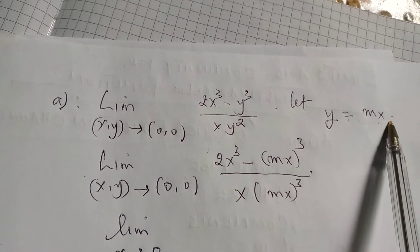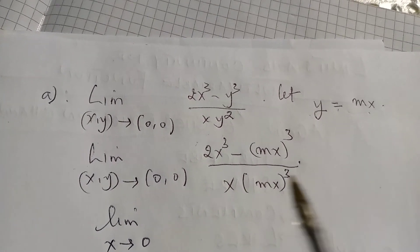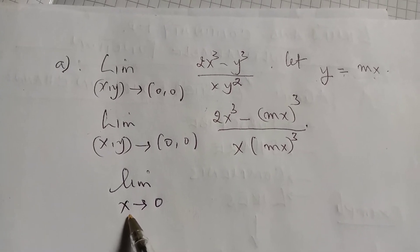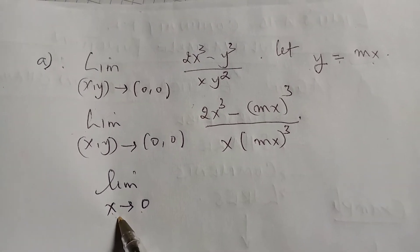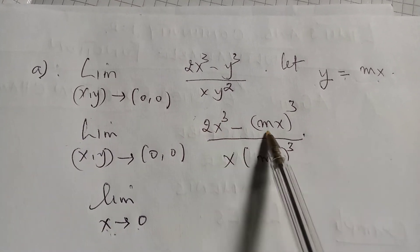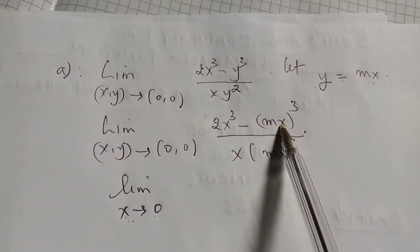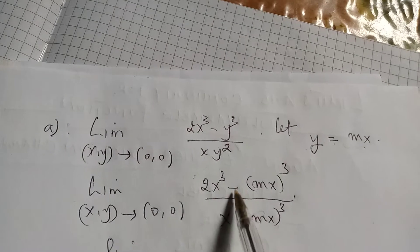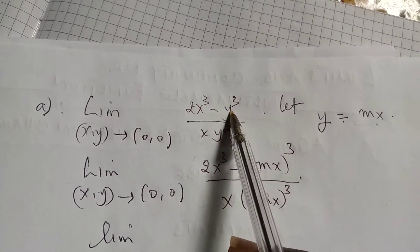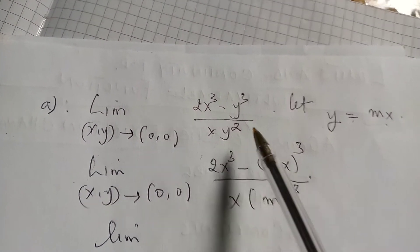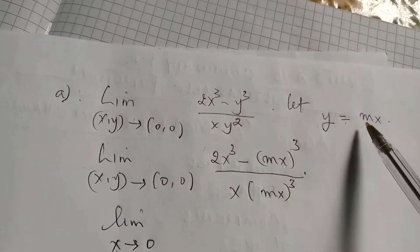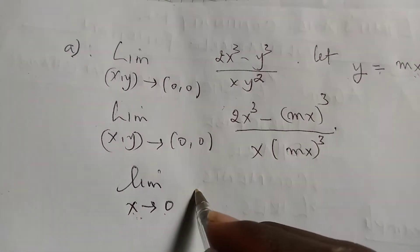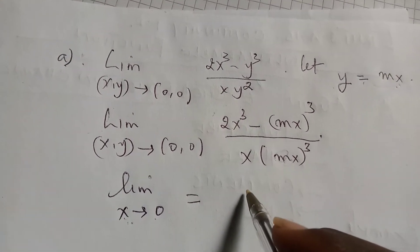The reason we write y = mx is because we want to reduce the expression to a single variable, x. Here m is just a coefficient of x, not an unknown. Since we can't work out two unknowns together, substituting y = mx converts everything to terms of x only.